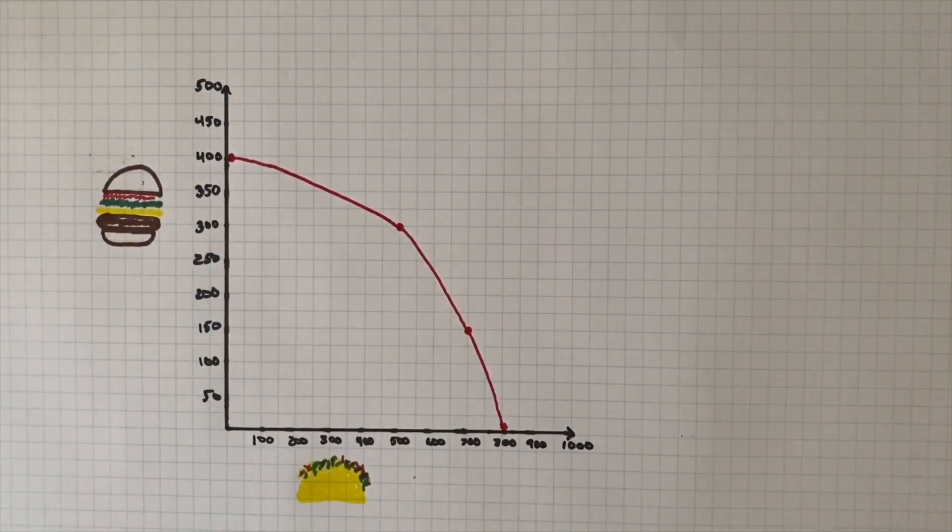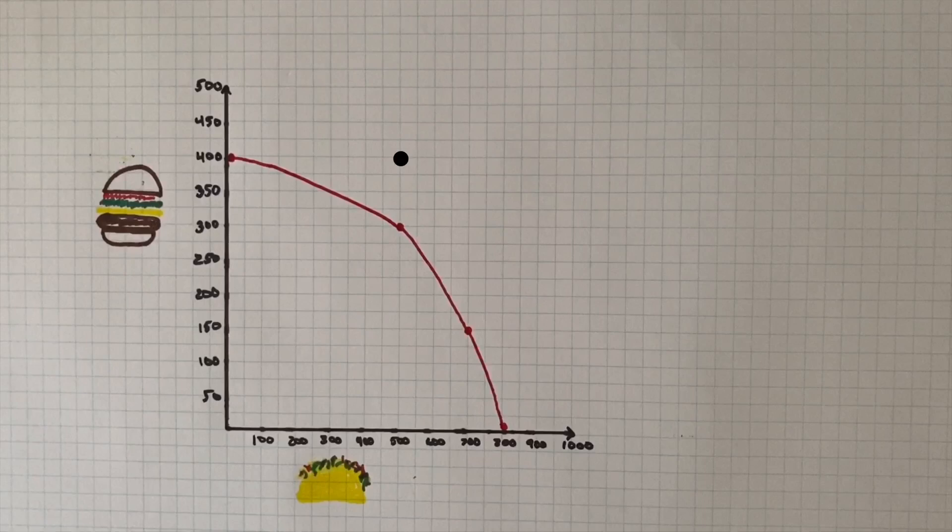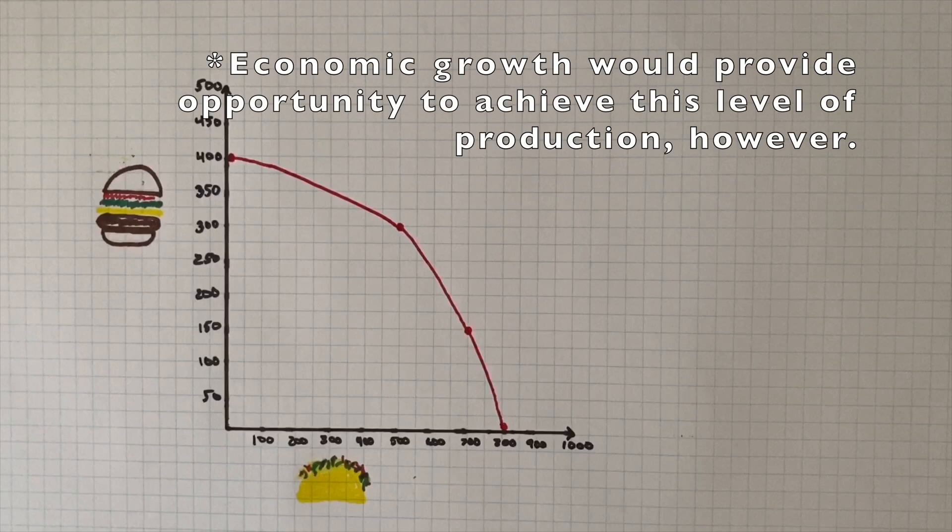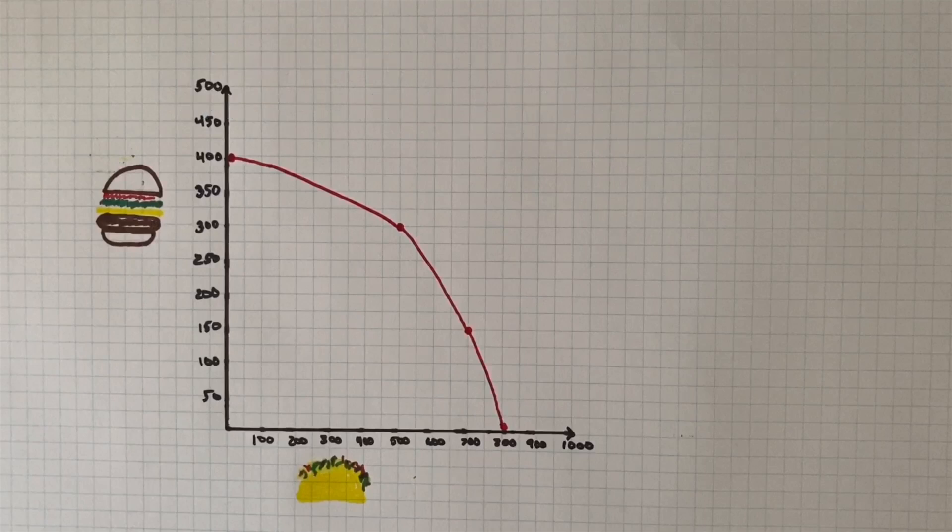Let's jump back for a moment and look at our graph for a couple practice questions on scarcity and opportunity costs. First, is it possible to produce 400 hamburgers and 500 tacos at the same time? In this case, no. Scarcity of resources only allows us to produce at most 400 hamburgers if we chose to completely avoid producing tacos. We could produce 500 tacos if we opted to produce only 300 hamburgers.